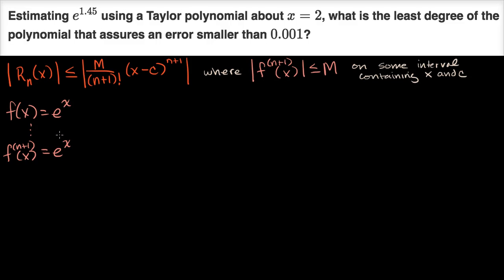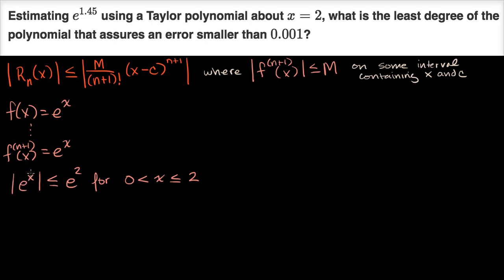These types of problems are very hard if it's difficult to bound the n plus one-th derivative. Here, we know that e to the x — and taking the absolute value, since this is positive — is going to be less than or equal to e squared for 0 less than x less than or equal to 2. e to the x isn't bounded over its entire domain, but I've set up an interval that contains the x we care about, 1.45, and also where our function is centered, x equals 2. So we can use e squared as our m.